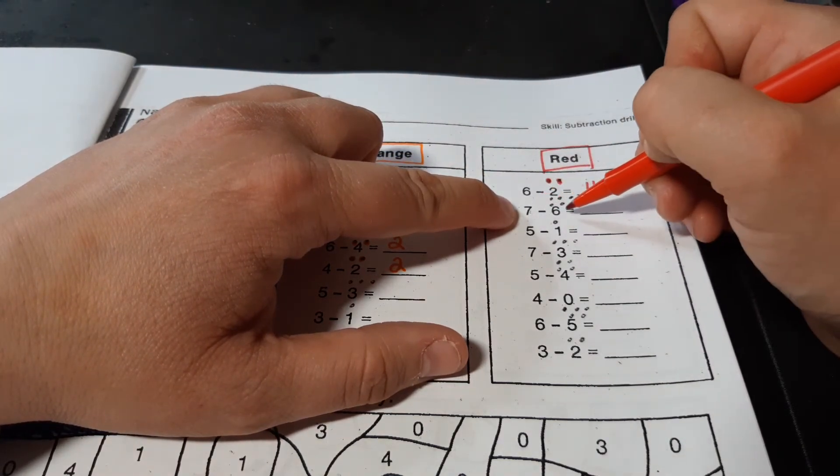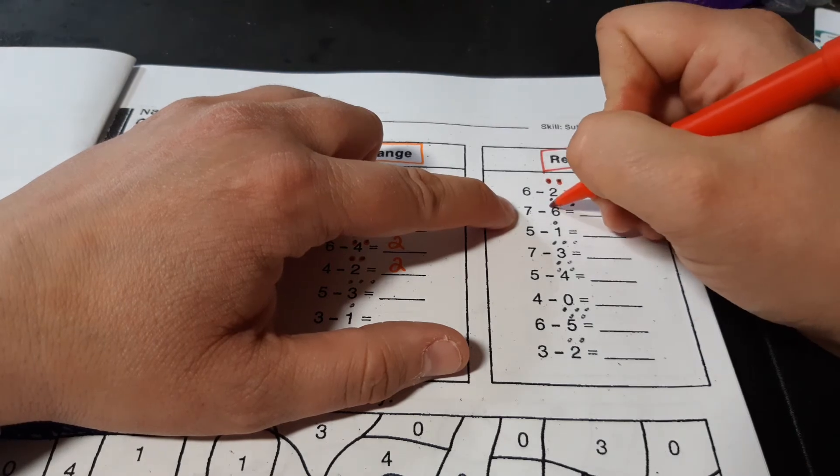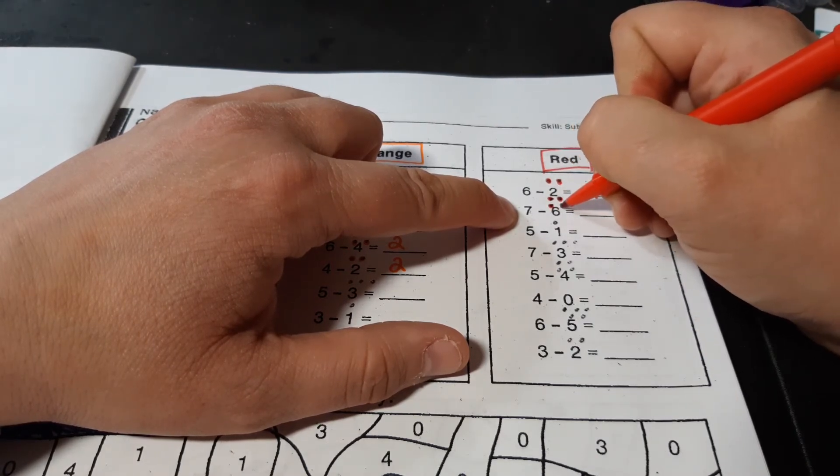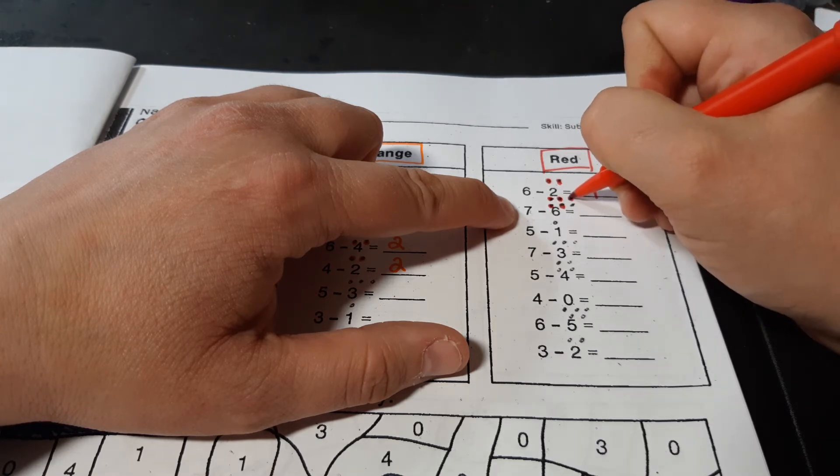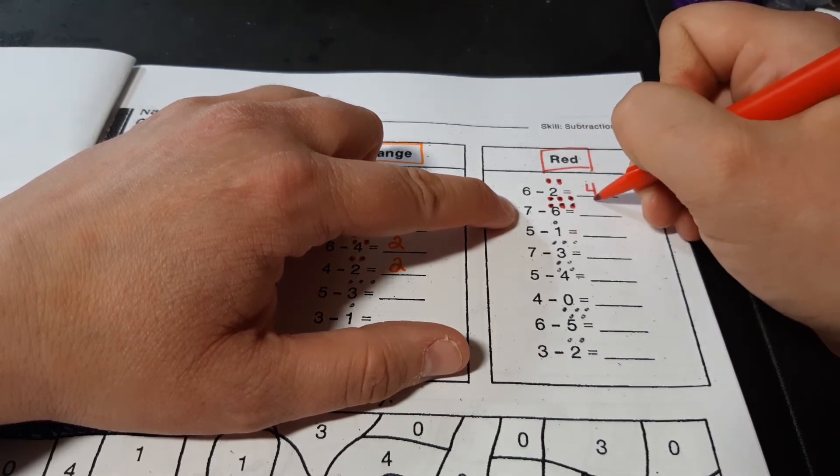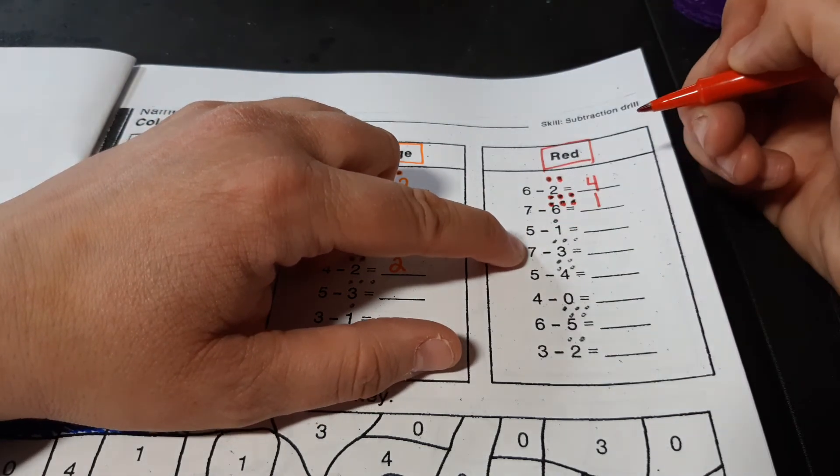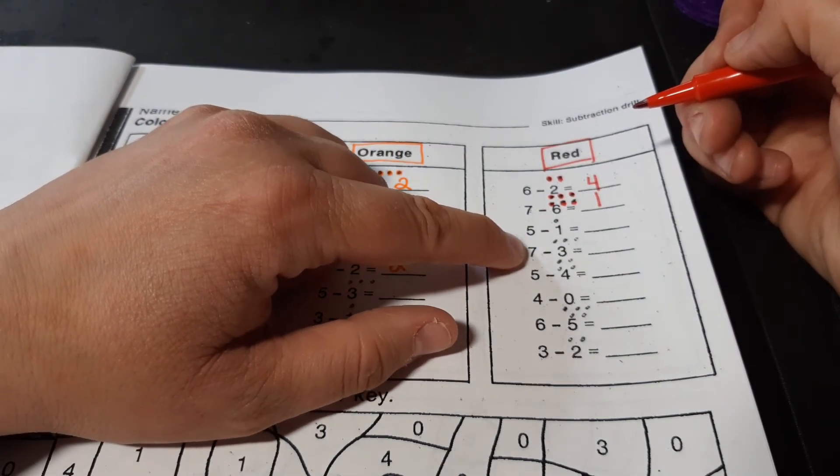We have 7 minus 6. 7, 6, 5, 4, 3, 2, 1. 5 minus 1. I think you can do that one on your own.